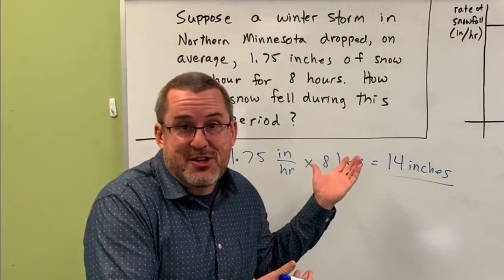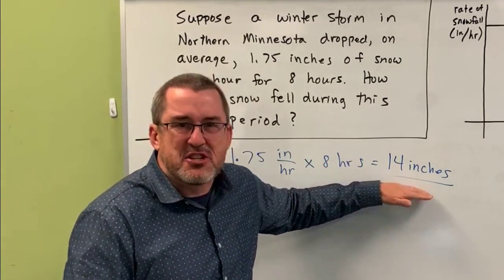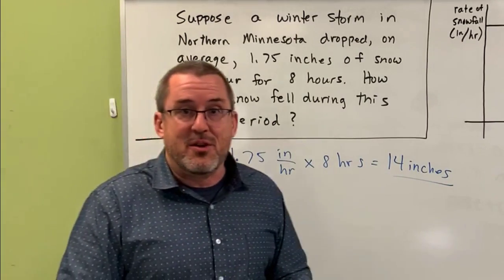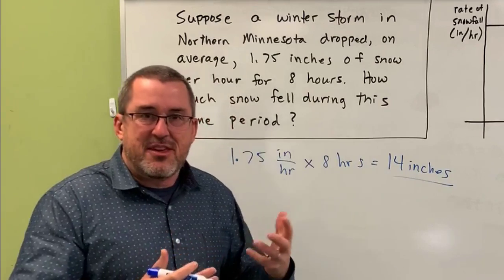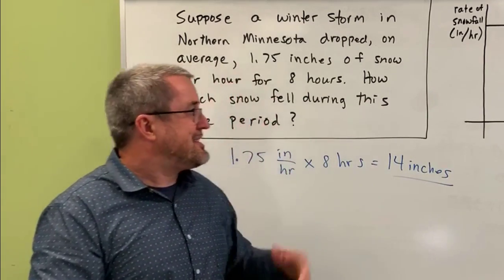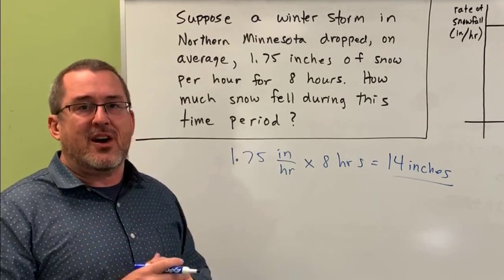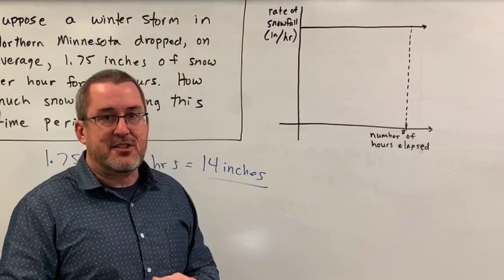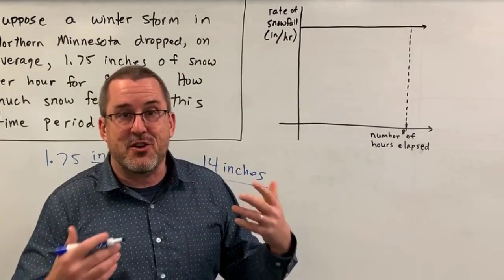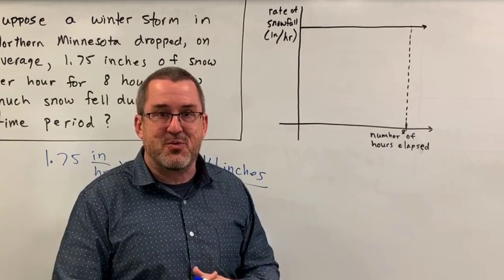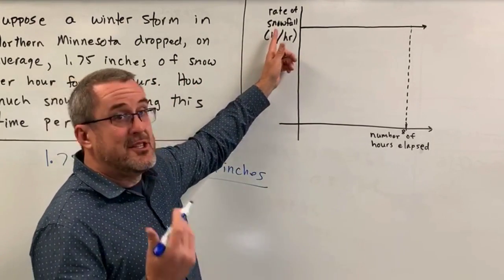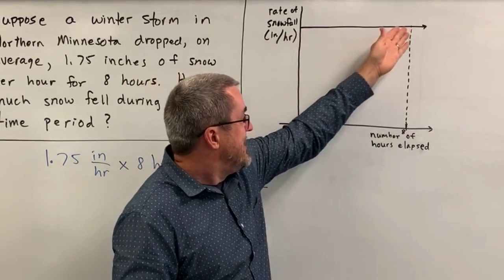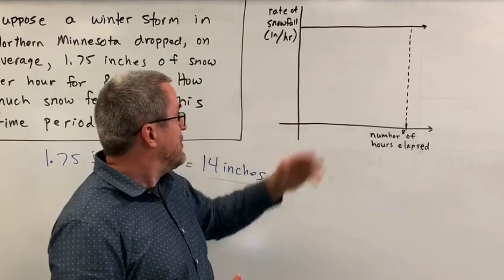Now, this is the average snowfall rate, so this would just be an estimation for how much snow has fallen during this storm. We're going to look at this in more depth later, but first, I want you to think about this in a more visual, or geometric, sense. What if we looked at the graph of this snowfall? Since the snow is falling on average 1.75 inches per hour, we could see this graphically as a horizontal constant function at 1.75 inches per hour for a total of eight hours.